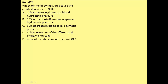For number 7 in the renal problem set, we are asked to predict which of the following factors would cause the greatest increase in GFR. In order to solve this problem, let's first go back and revisit the three main pressures that are involved in bulk flow processes in the glomerulus.